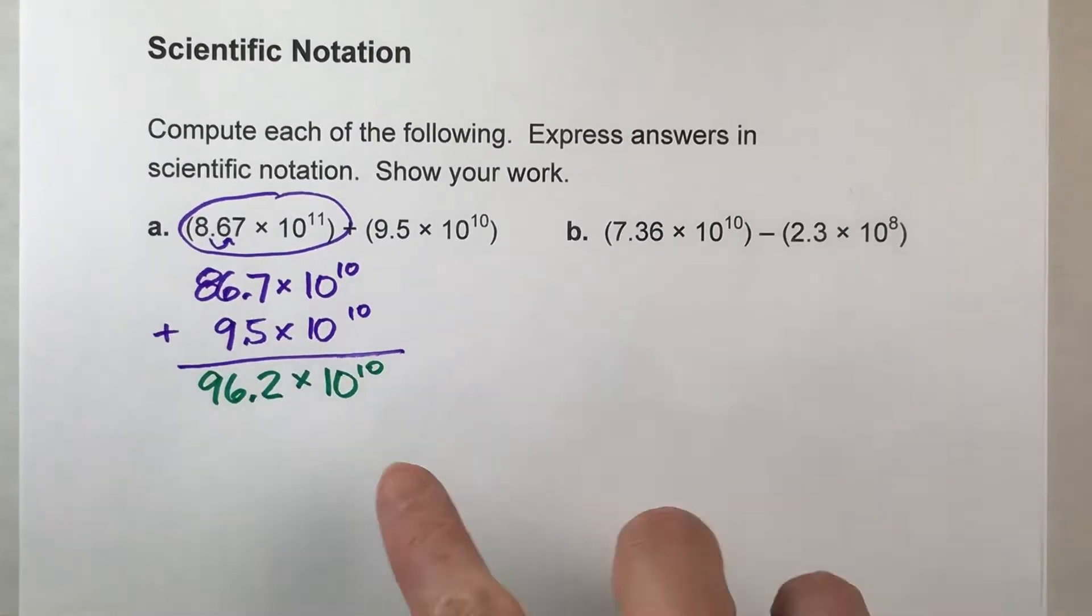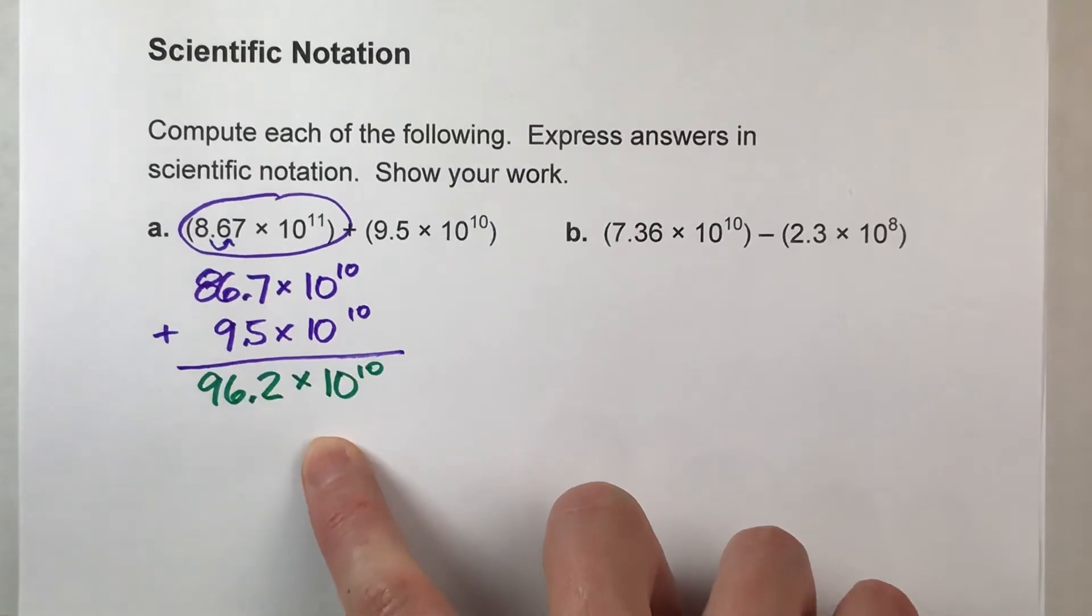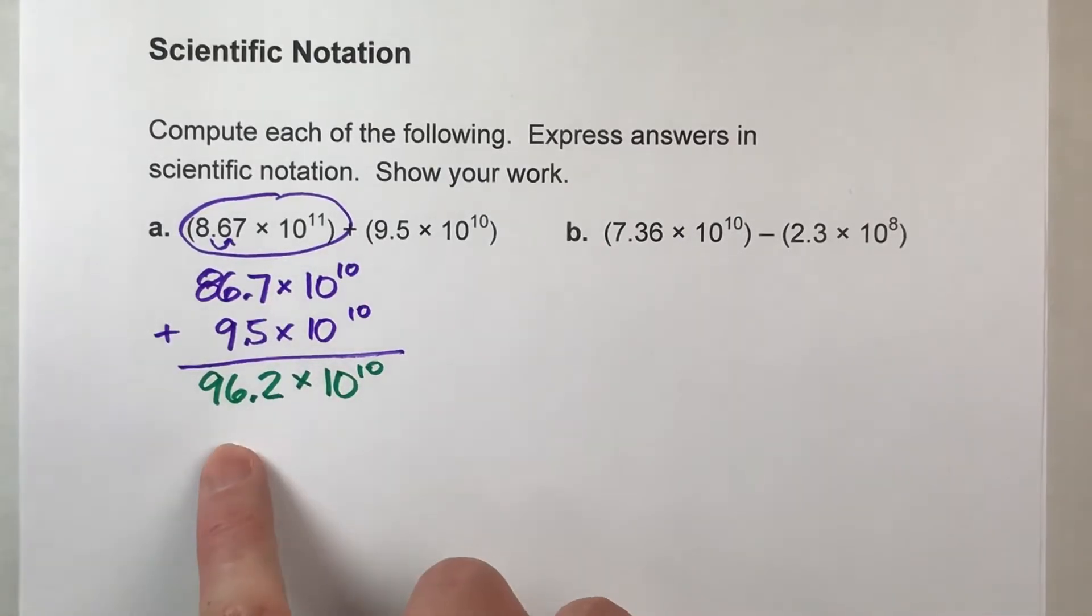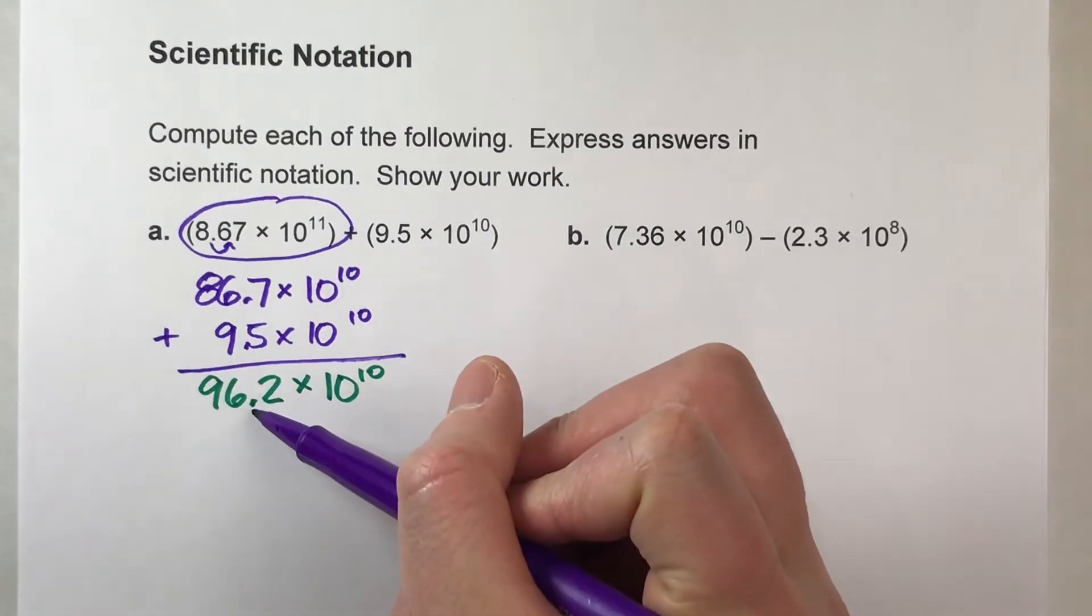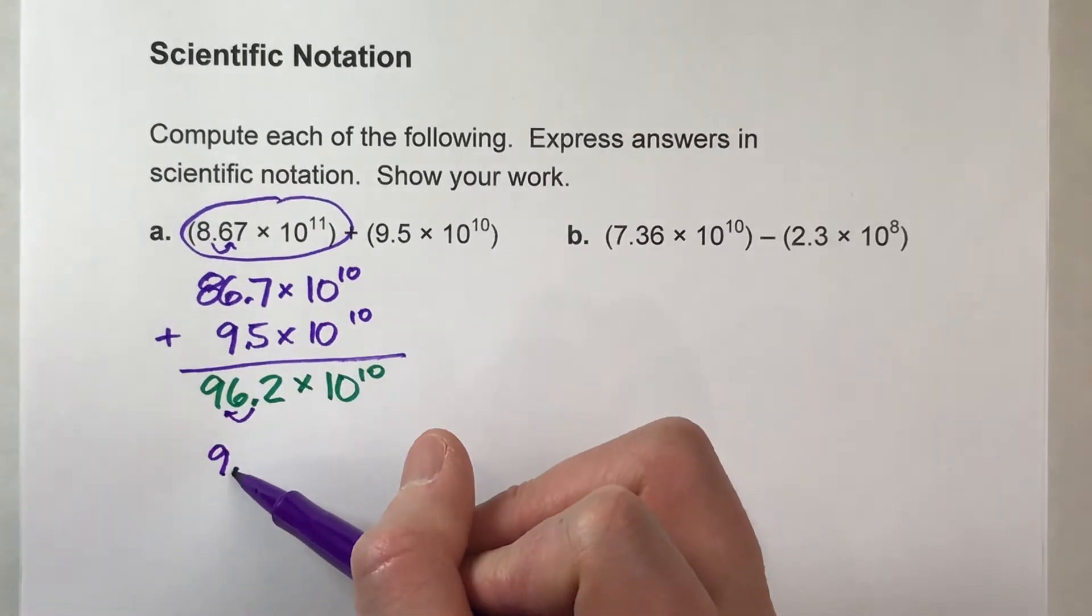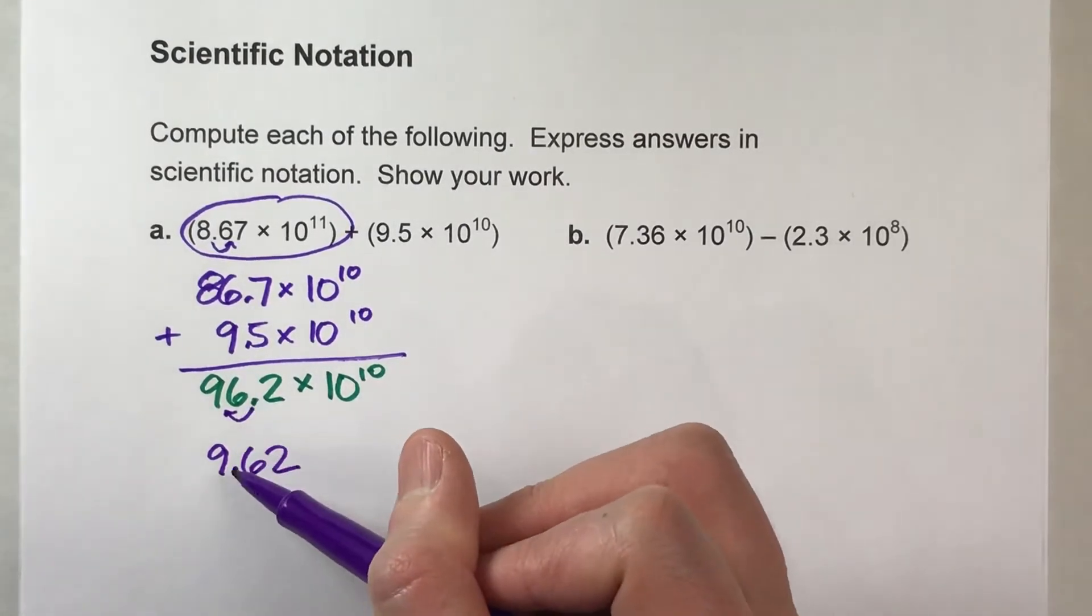So we end up getting 96.2 times 10 to the 10th power. And again, we want it in scientific notation, so we're going to have to adjust this back to scientific notation now. So I'm going to move that decimal over one place over to make this one step smaller.